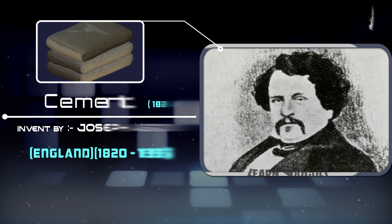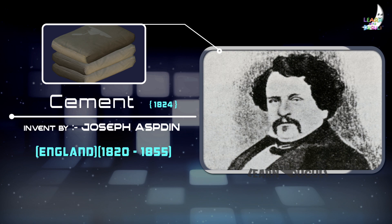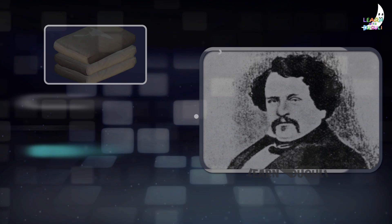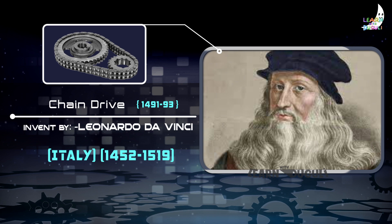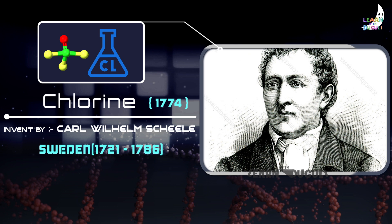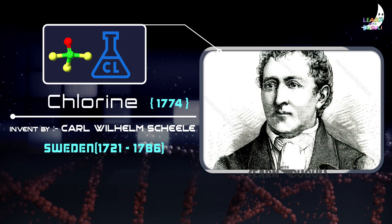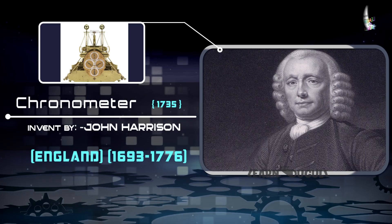Cement, invented by Joseph Aspdin. Chain Drive, invented by Leonardo da Vinci. Chlorine, invented by Carl Wilhelm Scheele. Chronometer, invented by John Harrison.